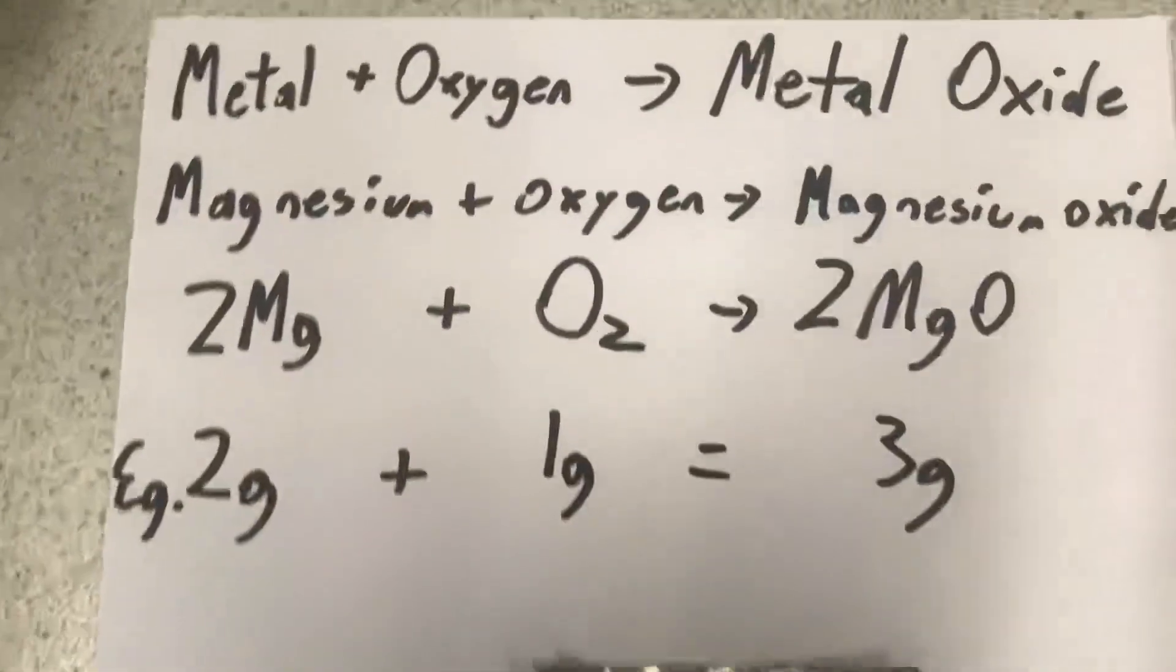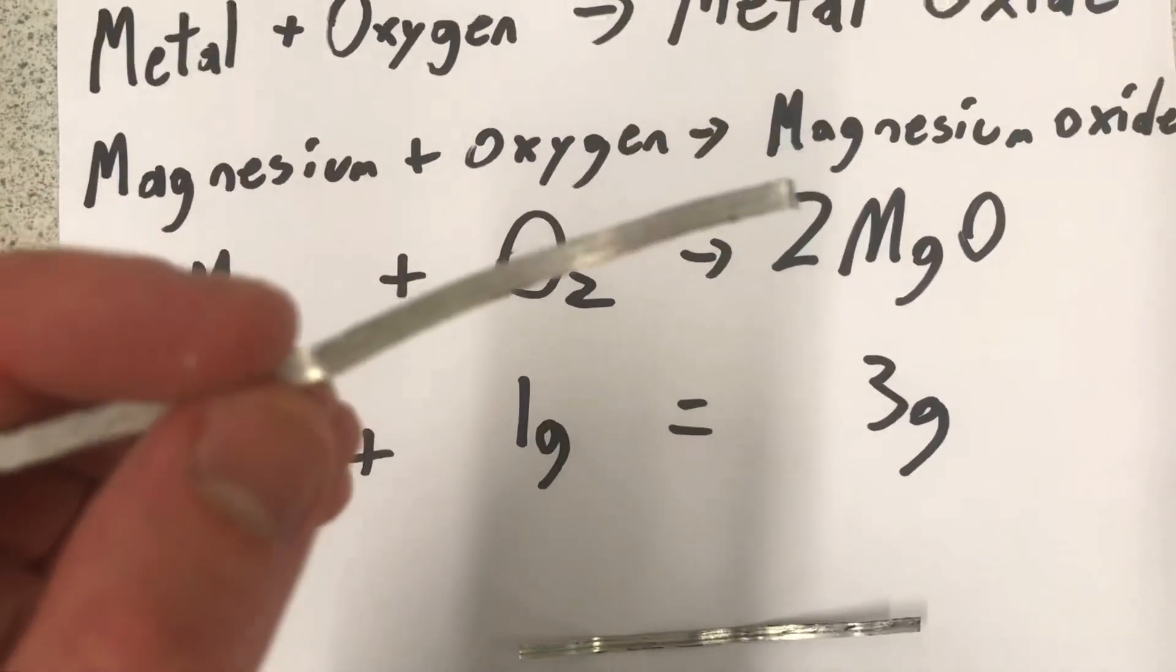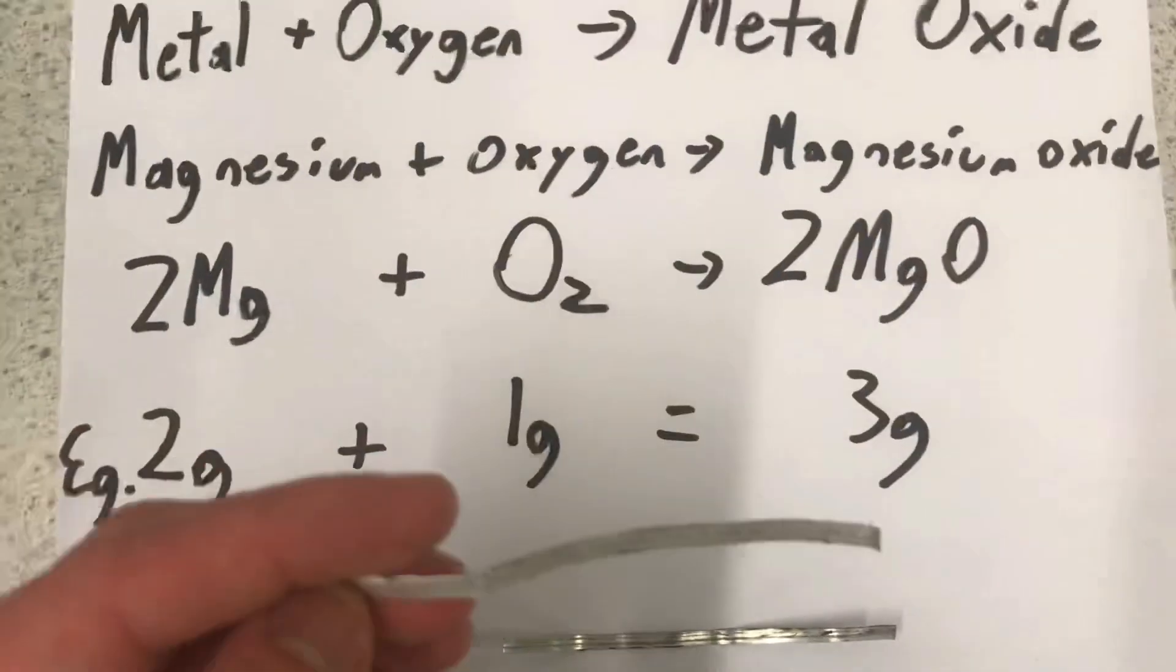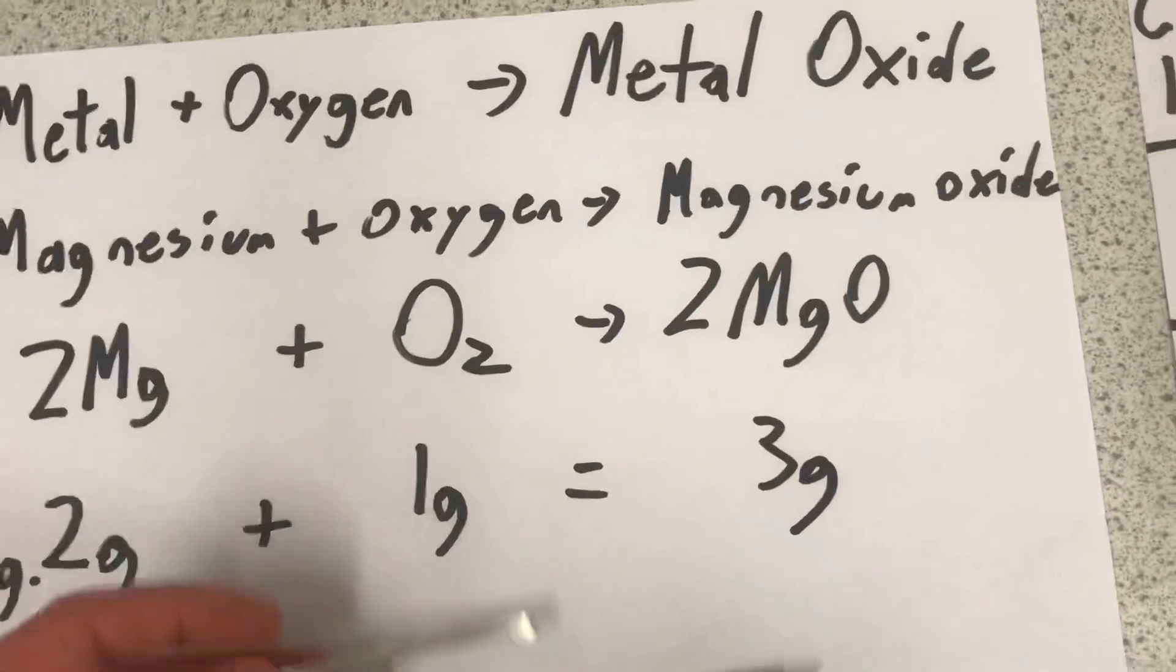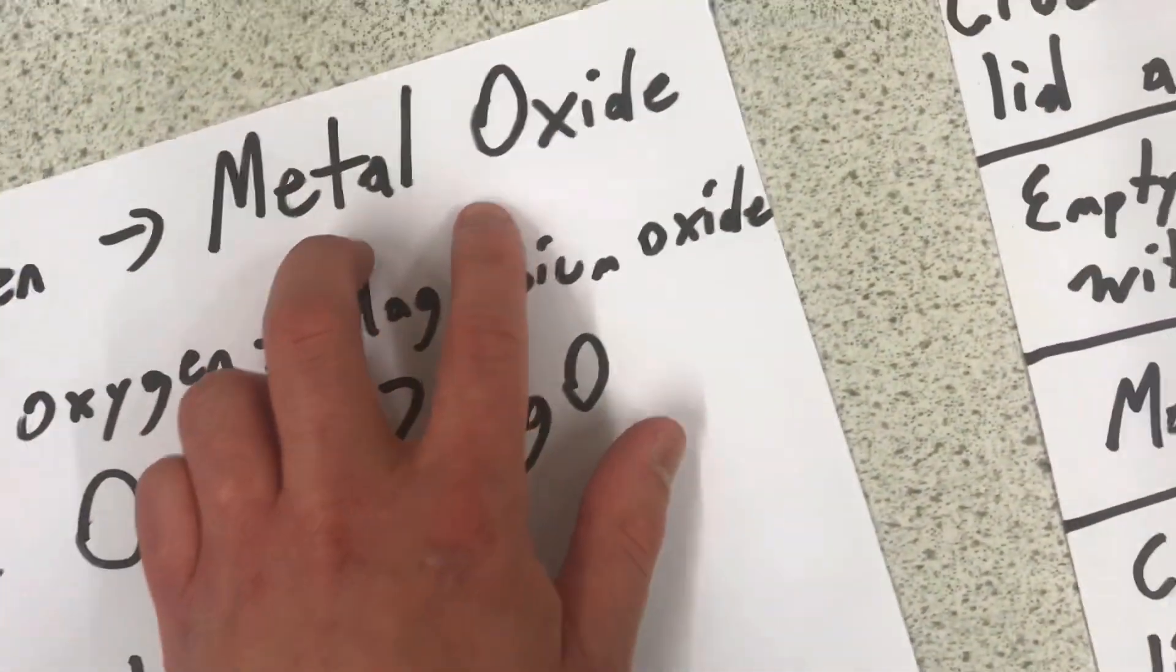Now, this is the experiment we will be doing today. We'll be using solid magnesium metal and adding oxygen through it by the process of combustion to make magnesium oxide.